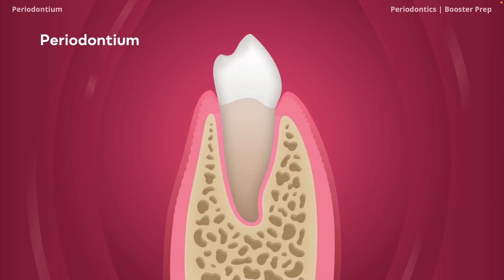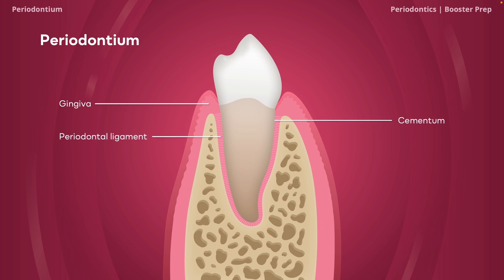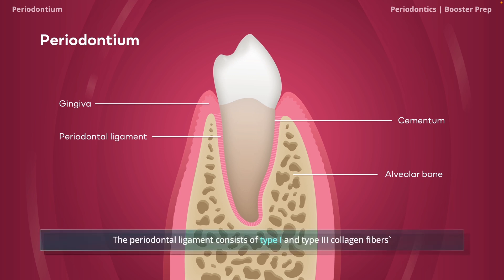Now let's look at the components of the periodontium. The periodontium is defined as the supporting structures of a tooth and consists of the gingiva, cementum, periodontal ligament (PDL), and alveolar bone. An important high-yield point is that the PDL consists of type 1 and type 3 collagen fibers, with the majority being type 1 collagen fibers.